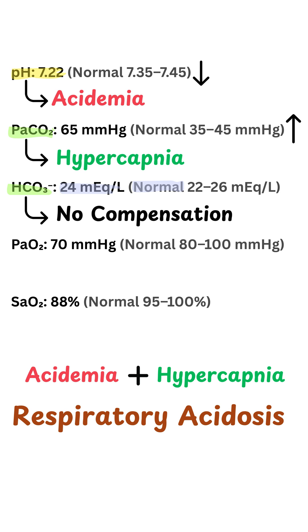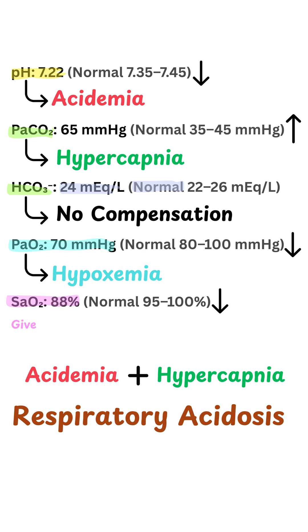Step four: oxygenation. The partial pressure of oxygen here is 70 mmHg, which is less than the normal range, meaning we have hypoxemia. The oxygen saturation is 88%, which is also lower than normal. Unless this is a chronic CO2 retainer — for instance, in patients with COPD — we should give oxygen to this patient and aim for a saturation of above 94%.